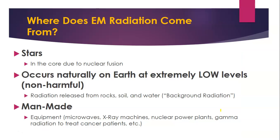Where does electromagnetic radiation come from? It comes from the core of stars. The process of nuclear fusion takes matter present in the core of a star and has that matter interact to the point where it actually transforms into energy — an incredible amount of energy. We call that radiation, electromagnetic energy, or electromagnetic radiation energy. We can also see electromagnetic radiation occurring naturally on earth at very low levels — things like rocks, soil, and water release natural radiation. It has the nickname 'background radiation' because it's there around us all the time and we don't even notice it. We've also found ways to create electromagnetic radiation energy: medically, scientifically, in our kitchens to cook food, x-ray machines, nuclear power plants, and gamma radiation is used to treat cancer patients.